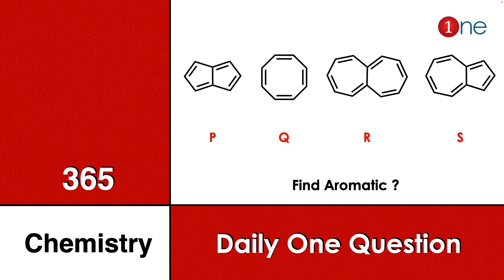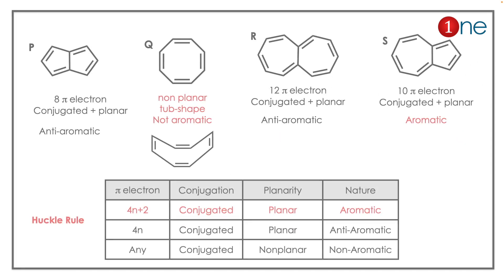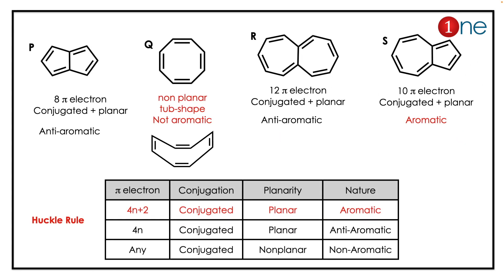Welcome to One Chemistry. This is the 365 Chemistry Series — one question daily. Here, four different compounds are given: P is pentalene, Q is cyclooctatetraene, R is a seven-membered ring fused system with six pi bonds, and S is a seven-membered and five-membered fused system. Among these, you have to find the aromatic compound.